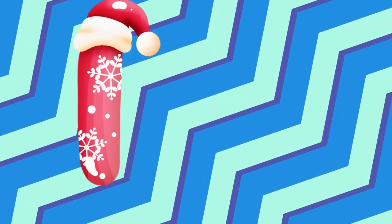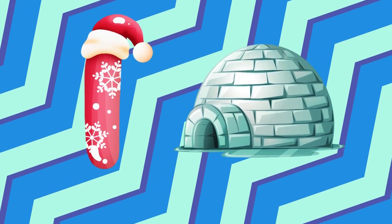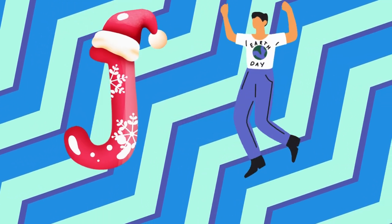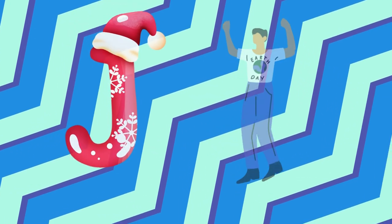I is for igloo, i-i-igloo. J is for jump, j-j-jump.